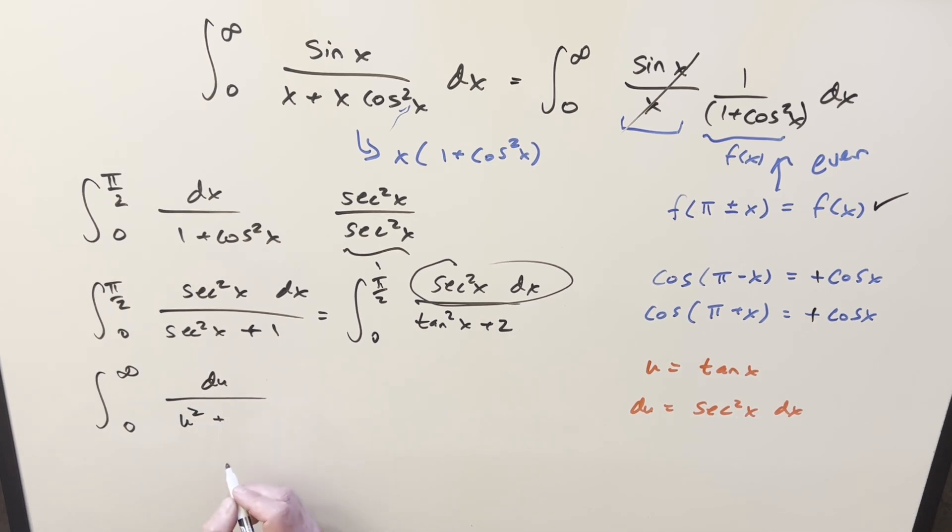But let me set this up. I'm going to write it as square root of two all squared, just setting up our arc tan formula. We need to bring, this is like our a value, we need to bring this out in the denominator. So we're going to have one over square root of two, arc tan, u over square root of two.